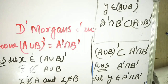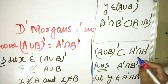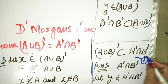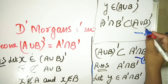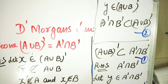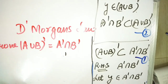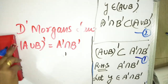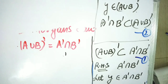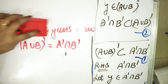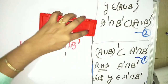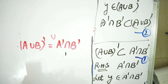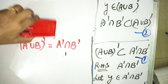So A complement intersection B complement is a subset of A union B complement. This was number 1, this was number 2. From 1 and 2: A union B complement equals A complement intersection B complement. This proves the first De Morgan's Law.